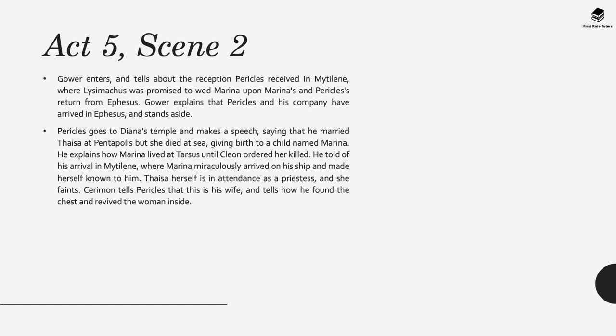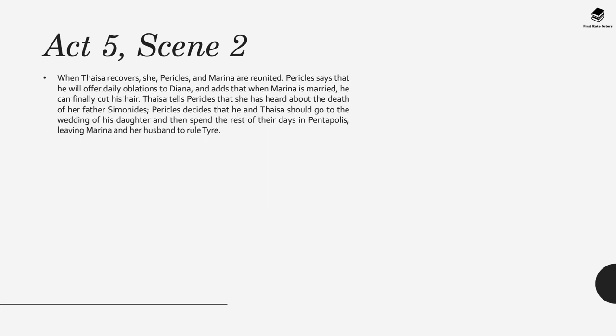Gower enters and tells that in Act 5, Scene 2, Pericles arrived in Mytilene, where Lysimachus has promised to wed Marina upon their return from Ephesus. Pericles and his company arrive in Ephesus. Pericles goes to Diana's temple and makes a speech saying he married Thaisa in Pentapolis but she died at sea giving birth to a child called Marina. He explains how Marina lived at Tarsus until Cleon ordered her killed, and how Marina miraculously arrived on his ship and made herself known to him. Thaisa herself is in attendance as a priestess, and she faints. Cerumen tells Pericles this is his wife and explains how he found the chest and the woman was revived. When Thaisa recovers, she, Pericles, and Marina are reunited. Pericles says he will offer daily oblations to Diana, and adds that when Marina is married he can finally cut his hair.